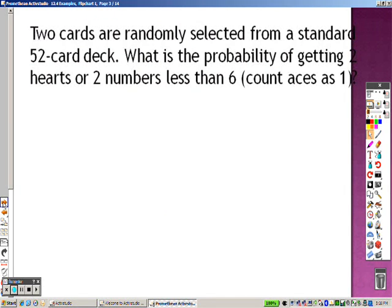So the first item is two cards were randomly selected from a deck of 52 cards. What's the probability of getting two hearts or two numbers that are less than six?